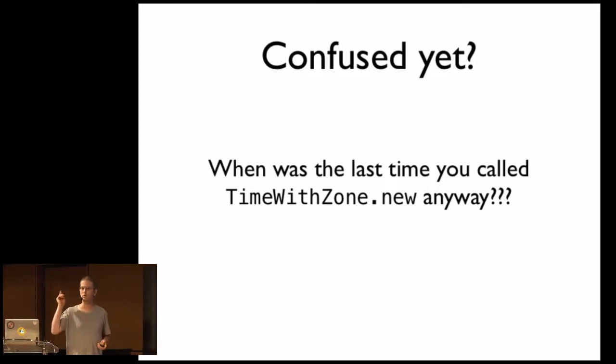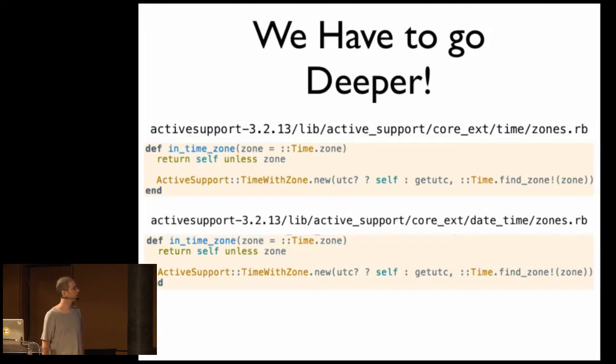This is not how you get active support time with zone objects. The way you normally do that is by calling a method on time or date time called in time zone. These are methods also defined in active support. So we go and we find their implementation. It's in active support's core extensions directory, right? So active support adds a lot to Ruby's core classes. And in this case, it's in either time zones or date time zones. And both methods look very, very similar.